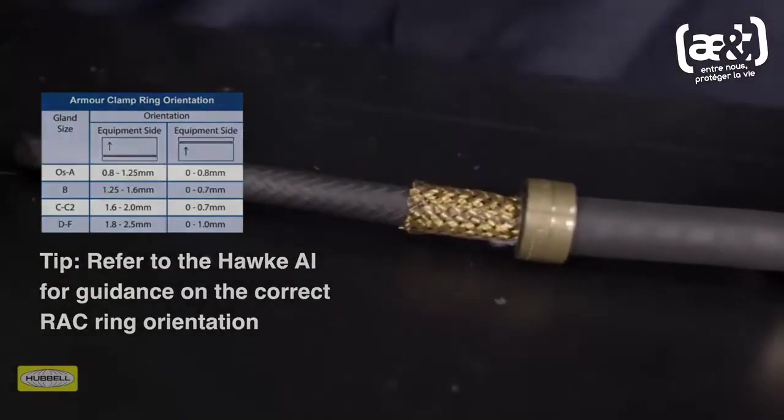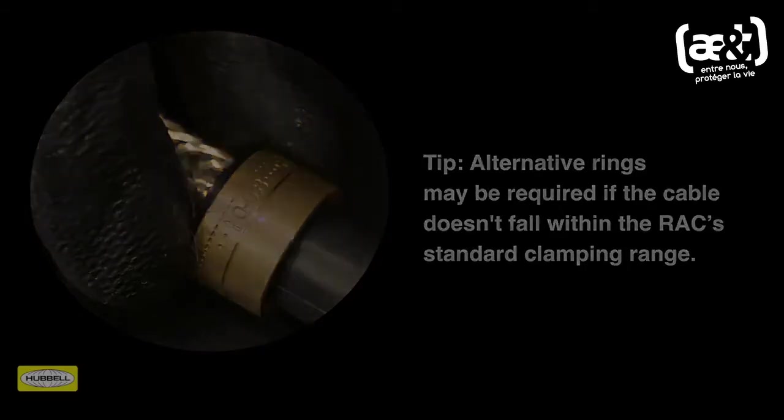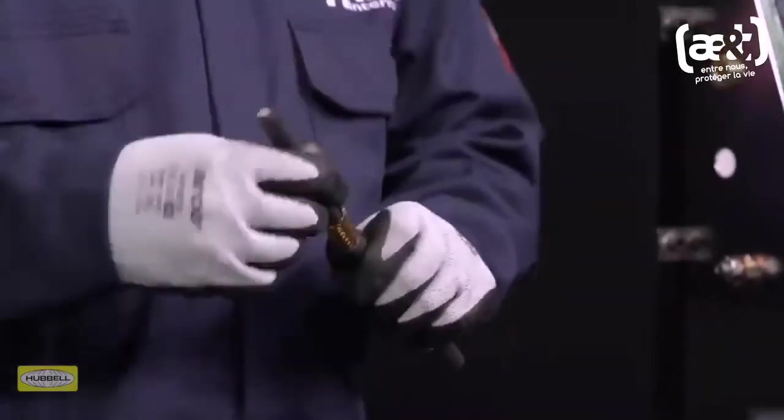Always refer to the Hawke assembly instructions for guidance on the correct armor clamp ring orientation. Tip: Alternative rings may be required if the cable doesn't fall within the RAC's standard clamping range.